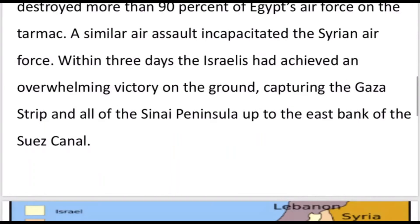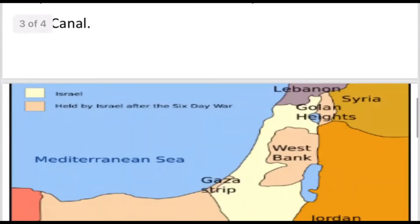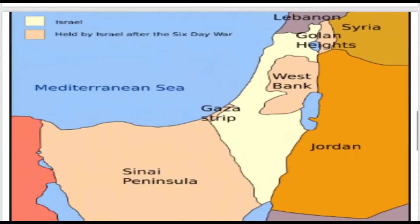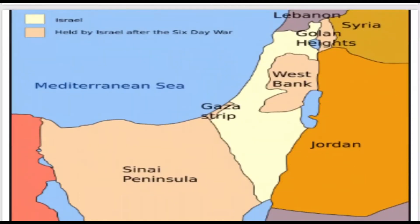This is a map. Israel is shown in light yellow. This is Israel. Gaza Strip, West Bank, Sinai Peninsula — the Sinai Peninsula is located in Egypt. This is where Israel is located.